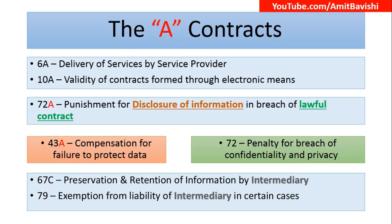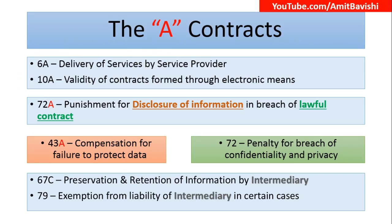Part 3: The A Contracts. There are certain sections in the Information Technology Act that revolve around contracts, directly or indirectly, and most of them are ending with the letter A. So: 6A, 10A, 72A, and 43A.